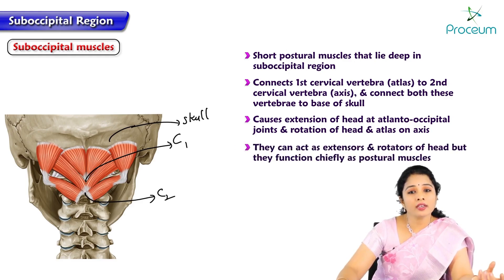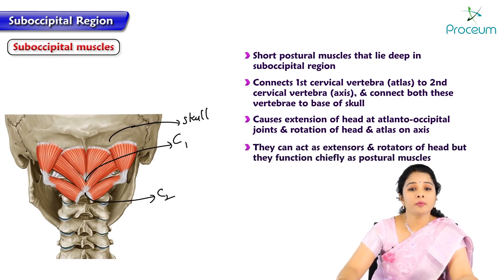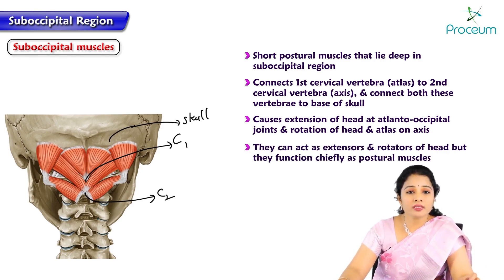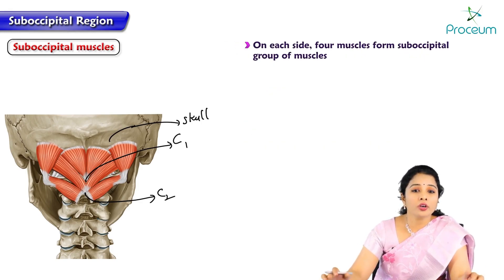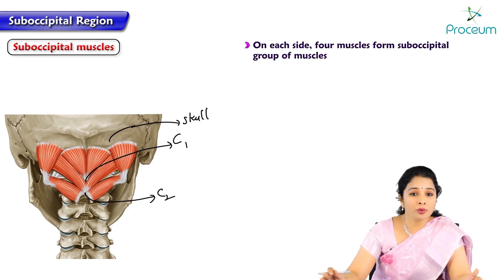They can act as extensors and rotators of the head but they function chiefly as postural muscles. Let us name these suboccipital muscles. On each side there are four muscles which form the suboccipital group of muscles.